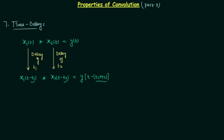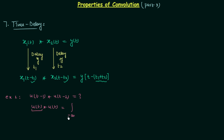This is all for the time delay property. Now we will quickly solve two examples. In example number one, we have the convolution of u(t-1) and u(t-2), and we are required to find the resultant signal. We will first find the resultant signal when there is no delay — u(t) convolved with u(t). From property number 6, whenever anything is convolved with the unit step signal, we simply integrate the first signal from minus infinity to t.